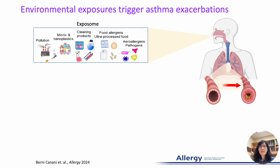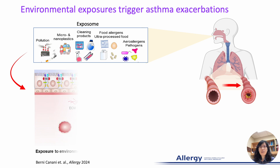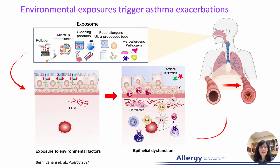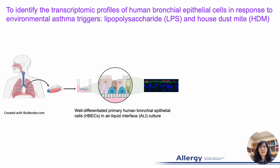Environmental exposure plays a critical role in the development of asthma, including triggering asthma exacerbations. During this exposure, AOE cells are damaged and initiate a cascade of immune responses leading to worsening asthma symptoms and exacerbations. Therefore, understanding how AOE cells respond to environmental exposure is crucial for studying asthma pathogenesis. For this published work, we aim to identify unique transcriptomic profiles of human bronchial epithelial cells in response to lipopolysaccharide and house dust mite.